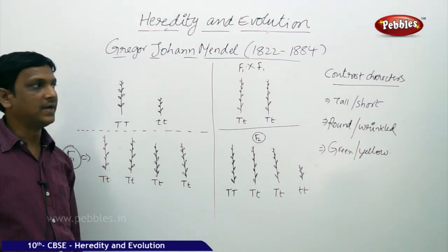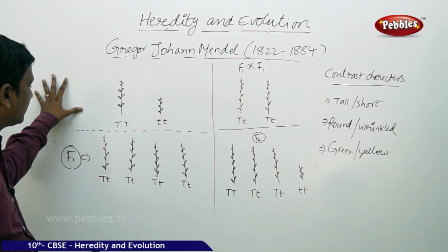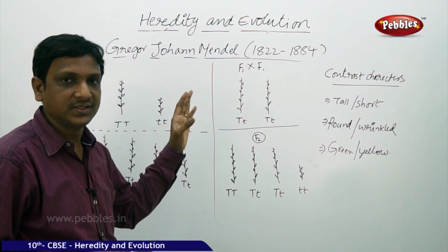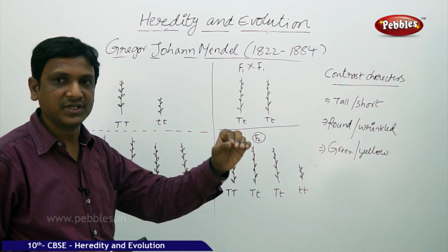Now let us see the experiment conducted by Gregor John Mendel. Here we can see two generations: F1 and F2. Mendel selected pea plants because there are some characters which are visible to the outside, which we can observe generation to generation. We can observe what changes happened and how the characters are inherited.